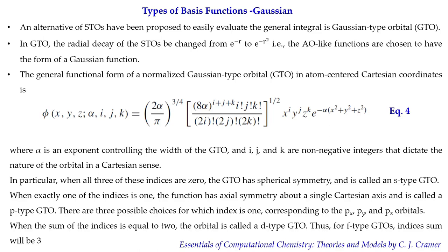There are three possible choices where one index equals one — x, y, or z — reflecting px, py, and pz orbitals. When the sum of the indices equals two, the orbital is a d-type GTO, and when the sum equals three, it is an f-type GTO. We are now shifting from Slater type orbitals to Gaussian type orbitals, and using Gaussian type orbitals makes calculations much faster.